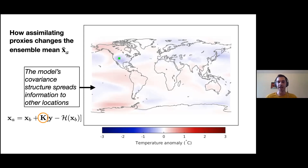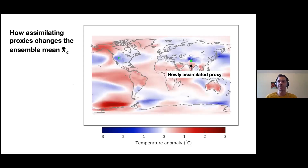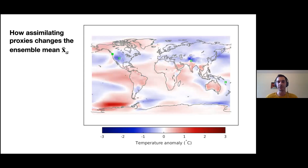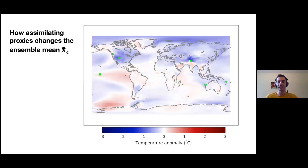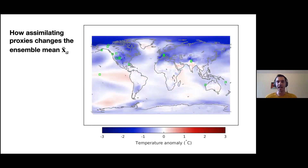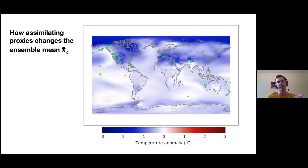This is the Kalman gain K that's doing this spreading of information. As we assimilate more proxies — second, third, fourth, fifth — each one hammers out the answer. Each proxy, depending on where it is, the covariance structure, and its uncertainties, impacts the reconstruction differently. The basic idea is that when you're assimilating all of these proxies, each of them contributes to an optimal solution: given the information from proxies and models with their uncertainties, what's the best estimate of what climate was doing in that particular year?